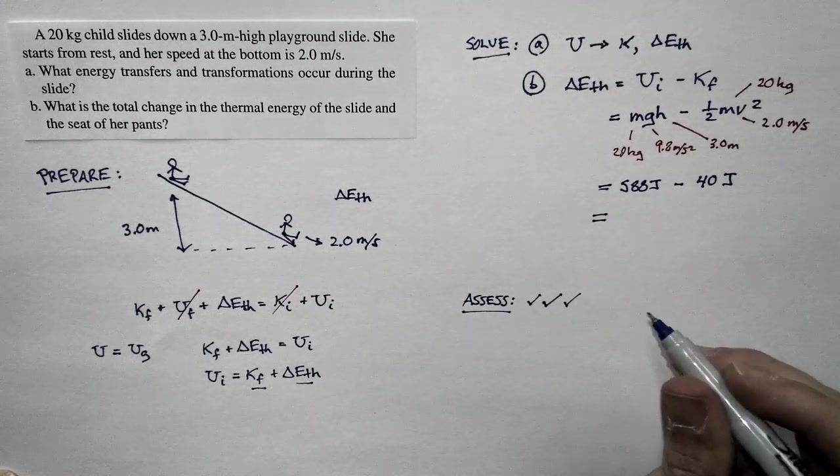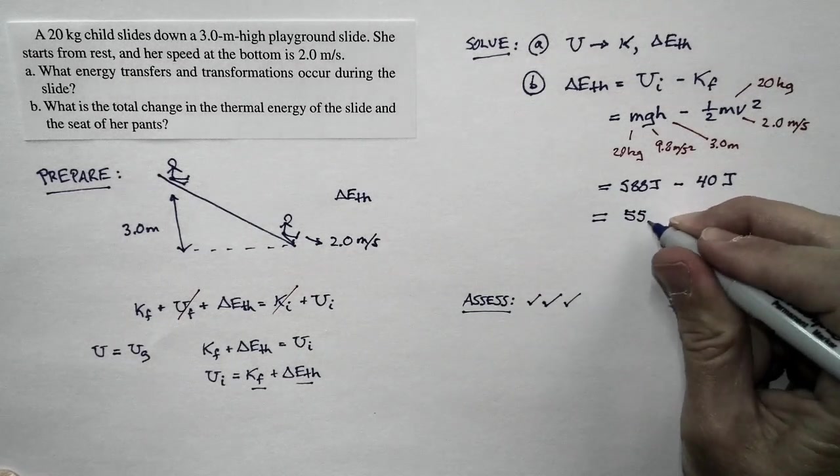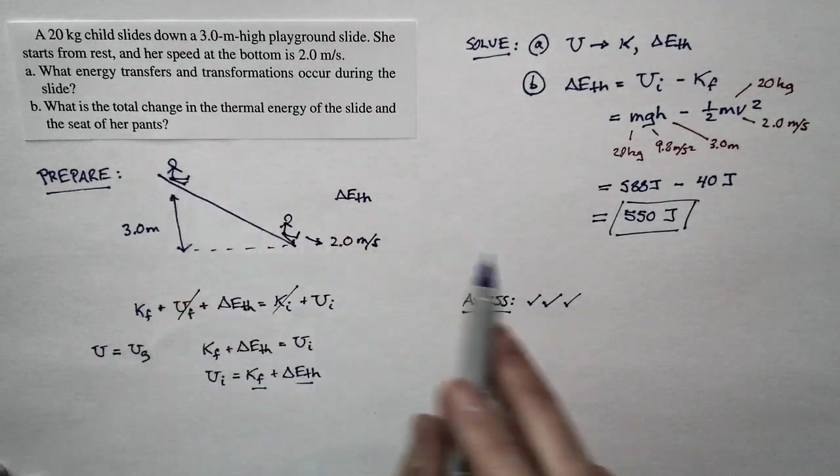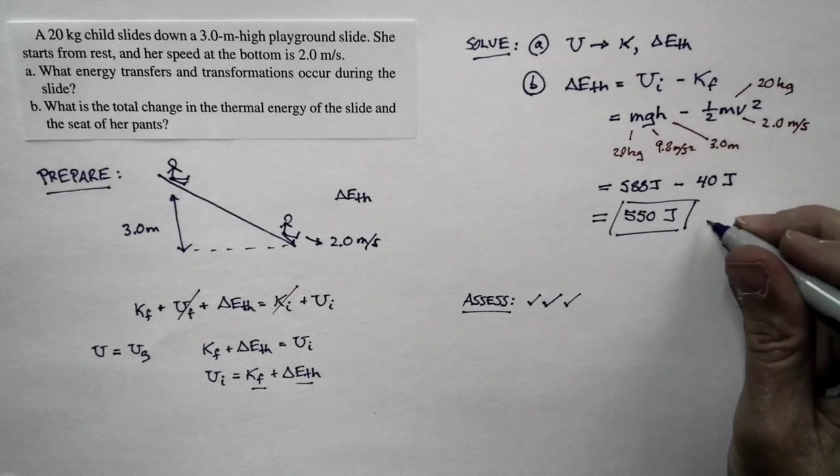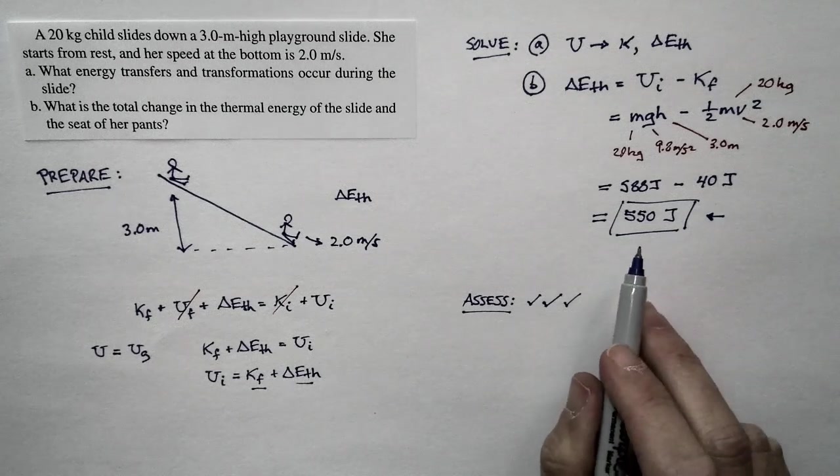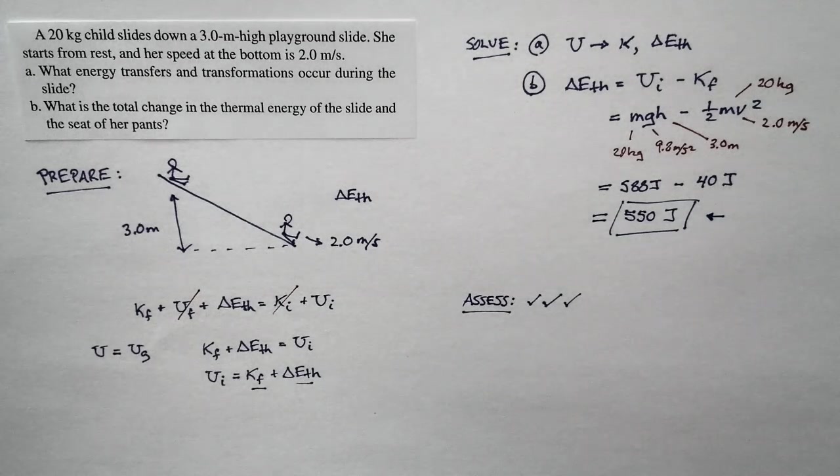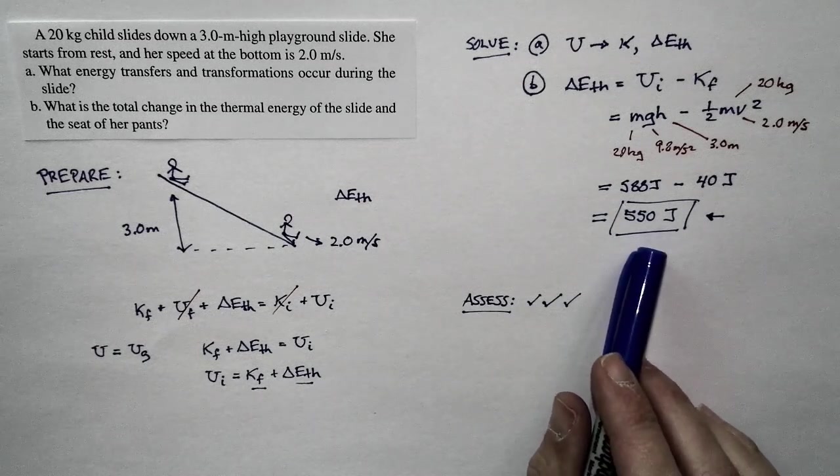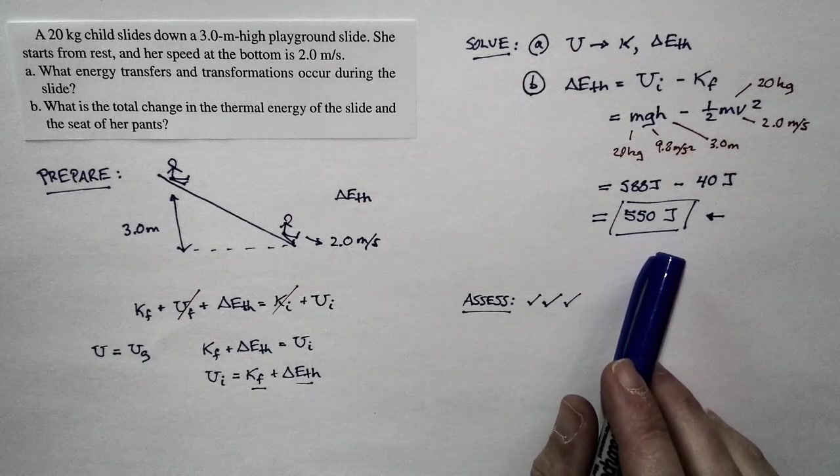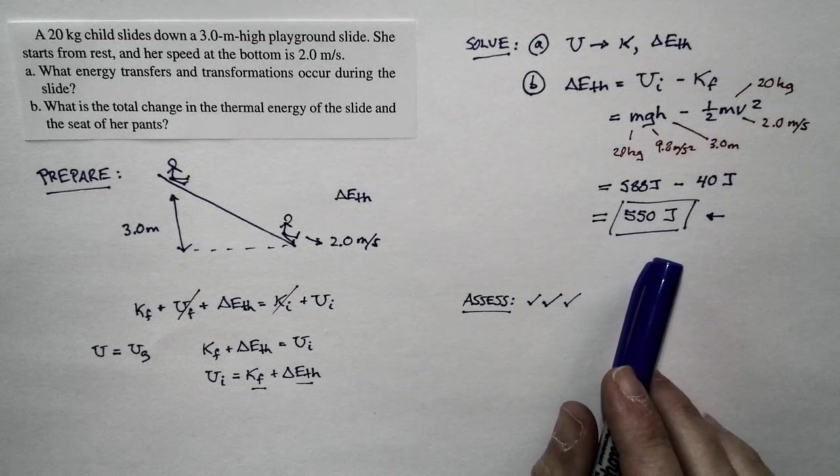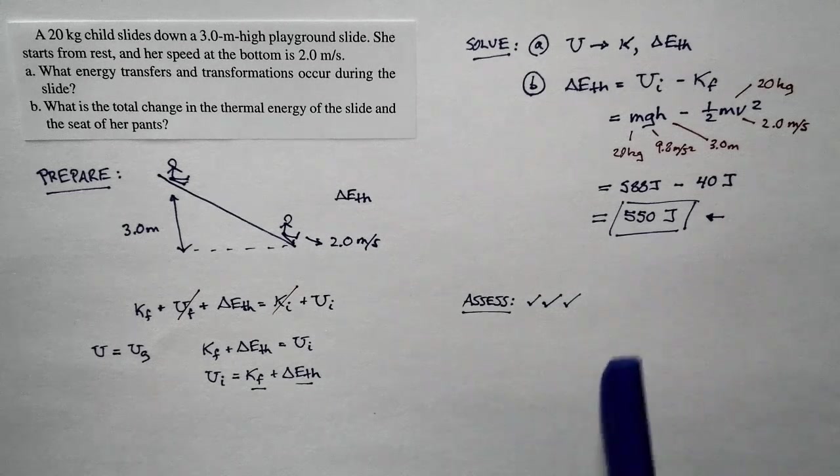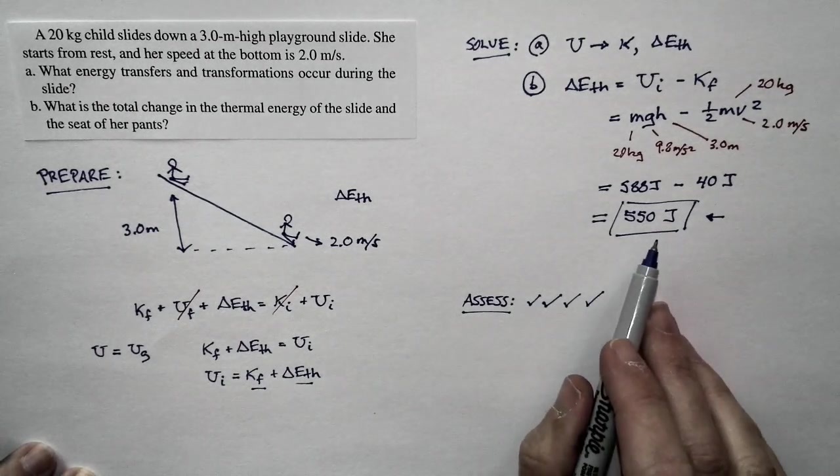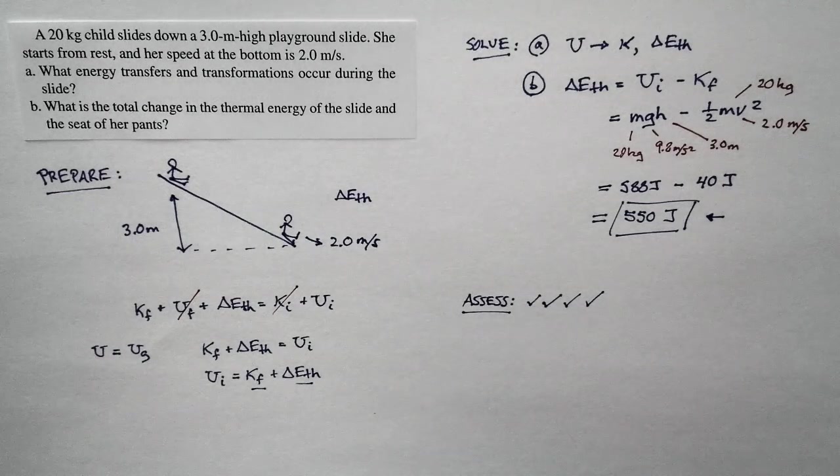The difference of these two, I'm going to round it to two significant figures, is 550 joules. That's the thermal energy increase of the slide and the seat of her pants. And in fact, most of it is probably going to go into the seat of her pants. Think about how much warming that's going to cause. It takes about 4,000 joules to raise the temperature of a kilogram of water by one degree Celsius. So this is enough to raise a kilogram of tissue by a fraction of a degree. Something you would notice, but not enough to make you uncomfortable and certainly not enough to cause any damage. So as our final piece of the assessment, we can say this number makes sense in terms of our understanding of the way the world works.